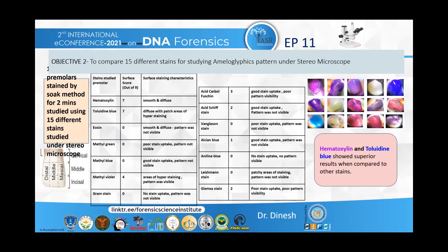In objective two, the aim was to compare 15 different stains for studying the ameloglyphics pattern under stereomicroscope. Since the soak method was found superior, 15 maxillary premolars were stained by soak method for two minutes and studied under stereomicroscope with 15 different stains. Hematoxylin and toluidine blue showed superior results compared to all other stains, with a score of seven surfaces out of nine.